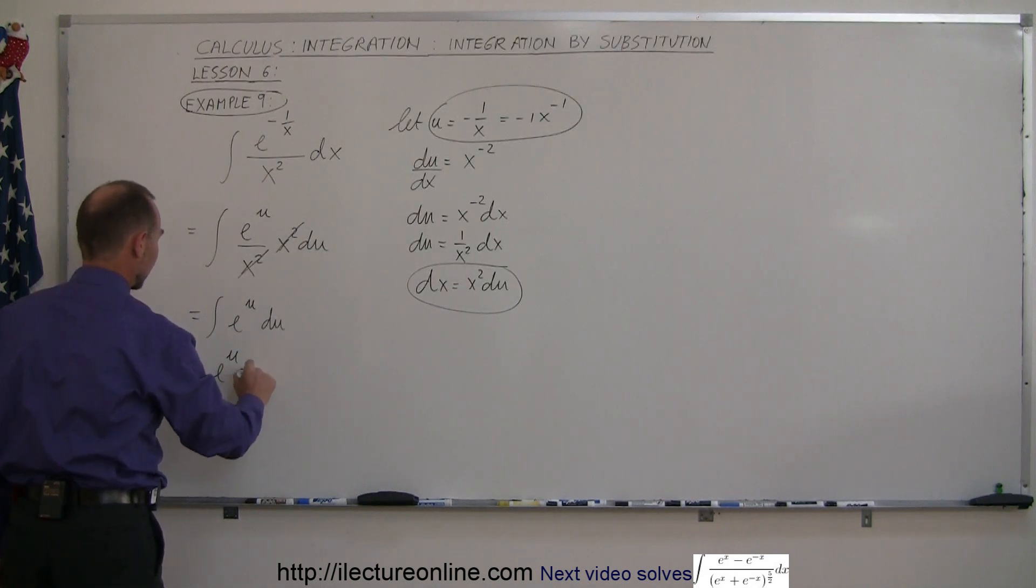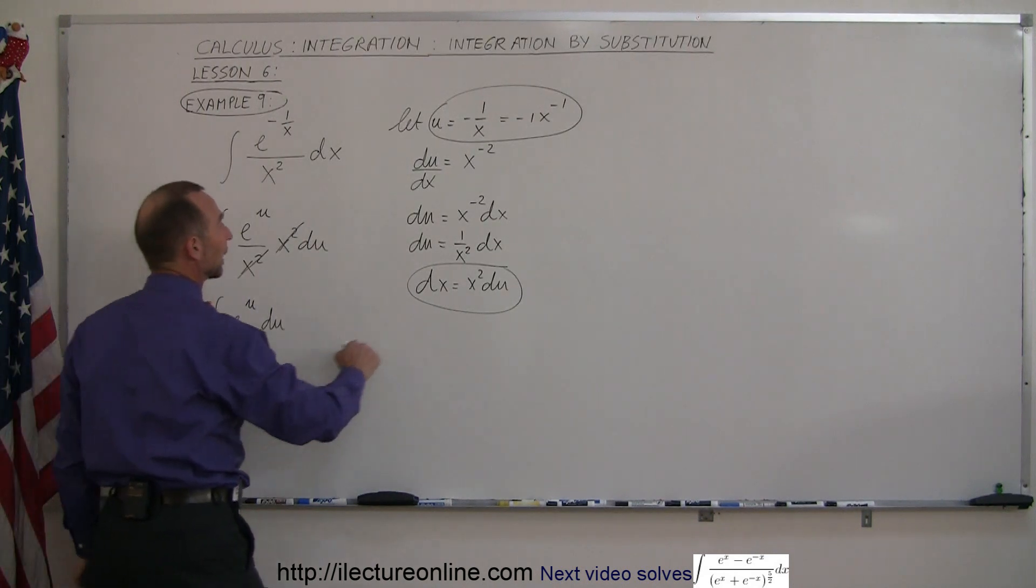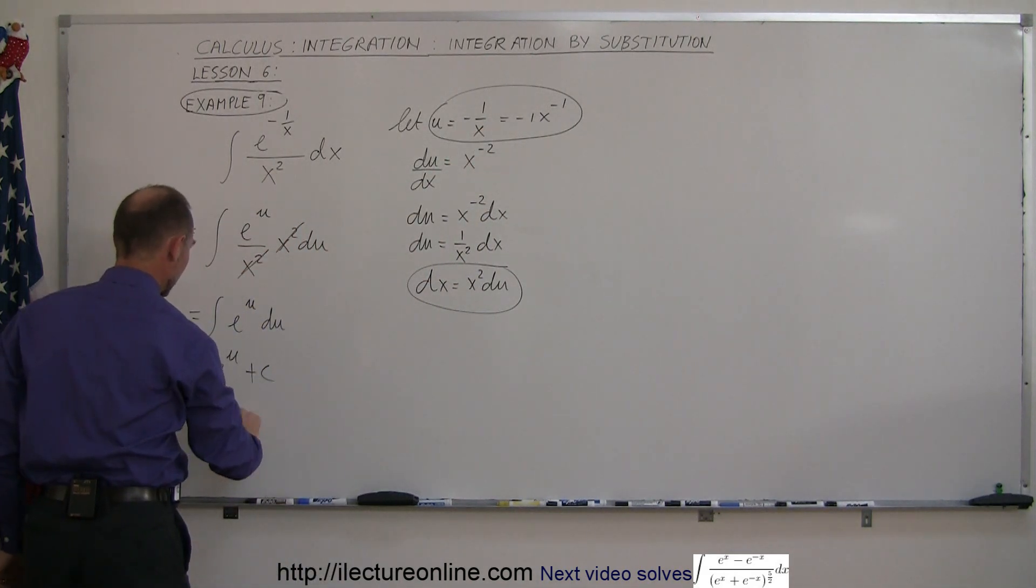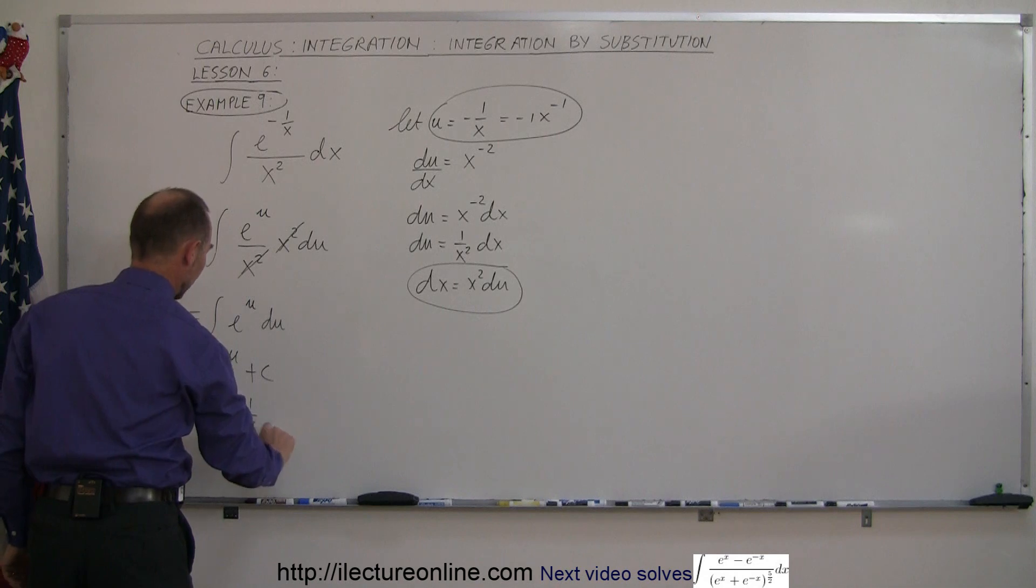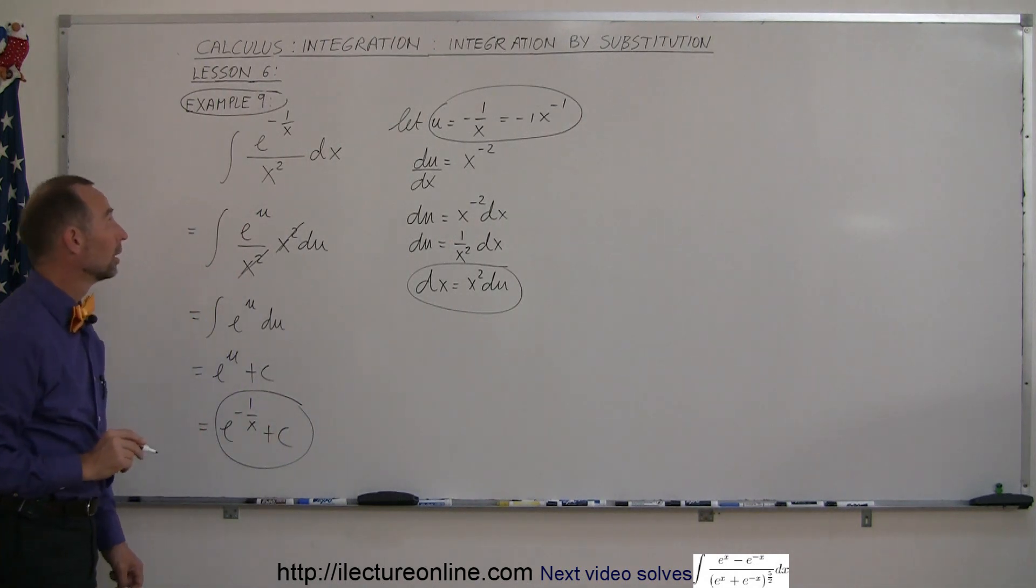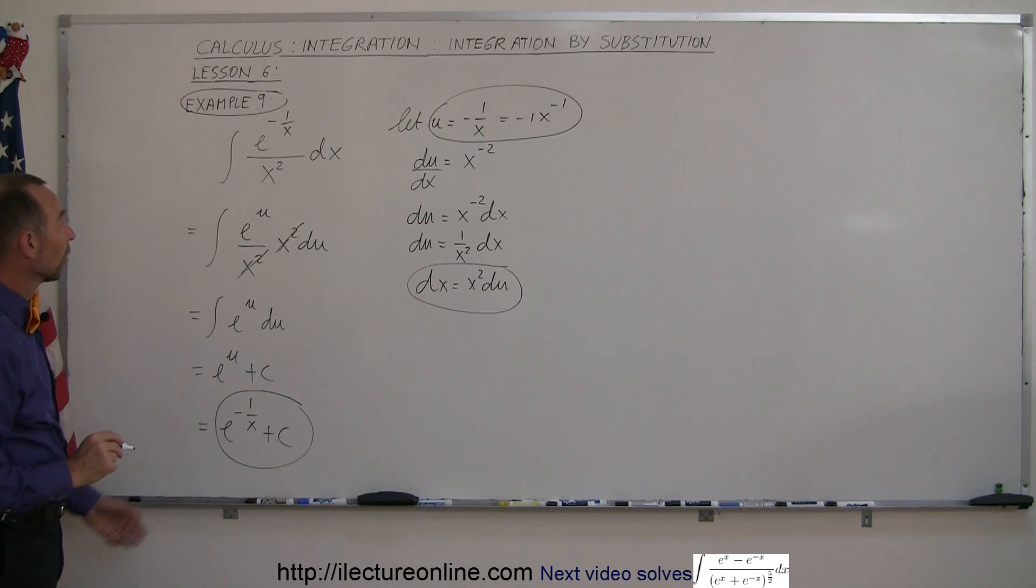Plus, of course, a constant of integration, and then you substitute back in what u is equal to, which is minus 1 over x. So this is equal to e to the minus 1 over x, plus a constant of integration, and there's the result of the integration for this example.